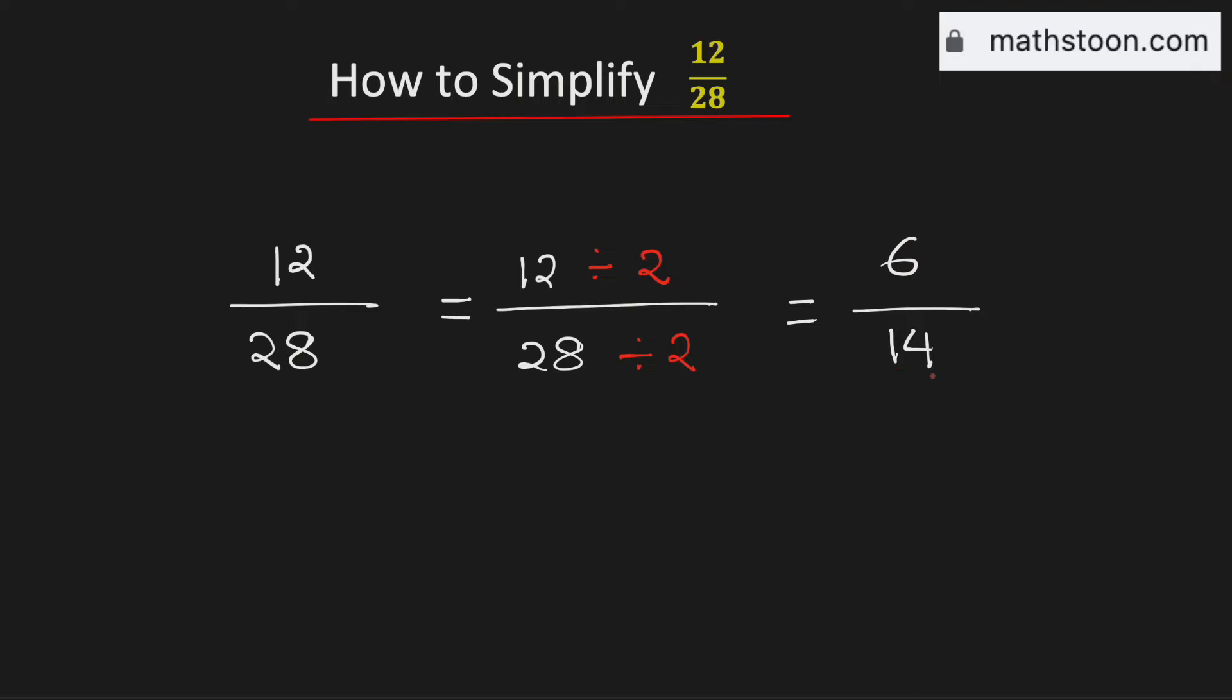You can see that both are even numbers so to simplify it further we will divide them by 2. And we get 3 over 7.